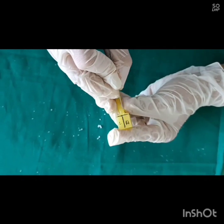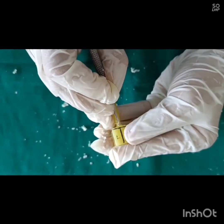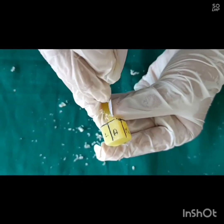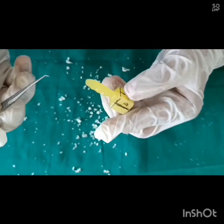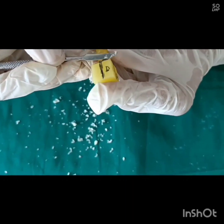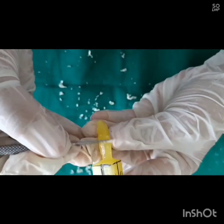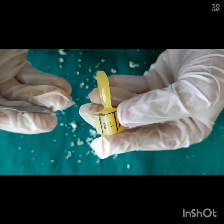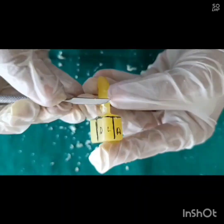The mesiodistal dimension of root is very less than labiolingual dimension of root. In order to show distal curvature at apical third, remove the wax on mesial one-third of the root. Root tapers gradually and blends towards the apex.